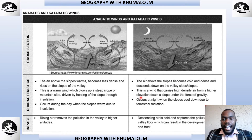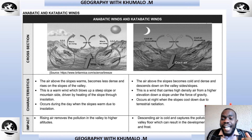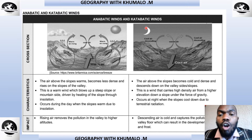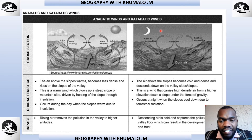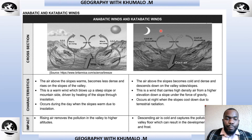Catabatic winds are those that blow down the valley slope at night. In the exam, they will give you a picture — you have to look for the symbol of the sun or the moon. The examiner can also give you a simple sketch with an arrow pointing down, which indicates catabatic winds blowing down the valley slope during the night.